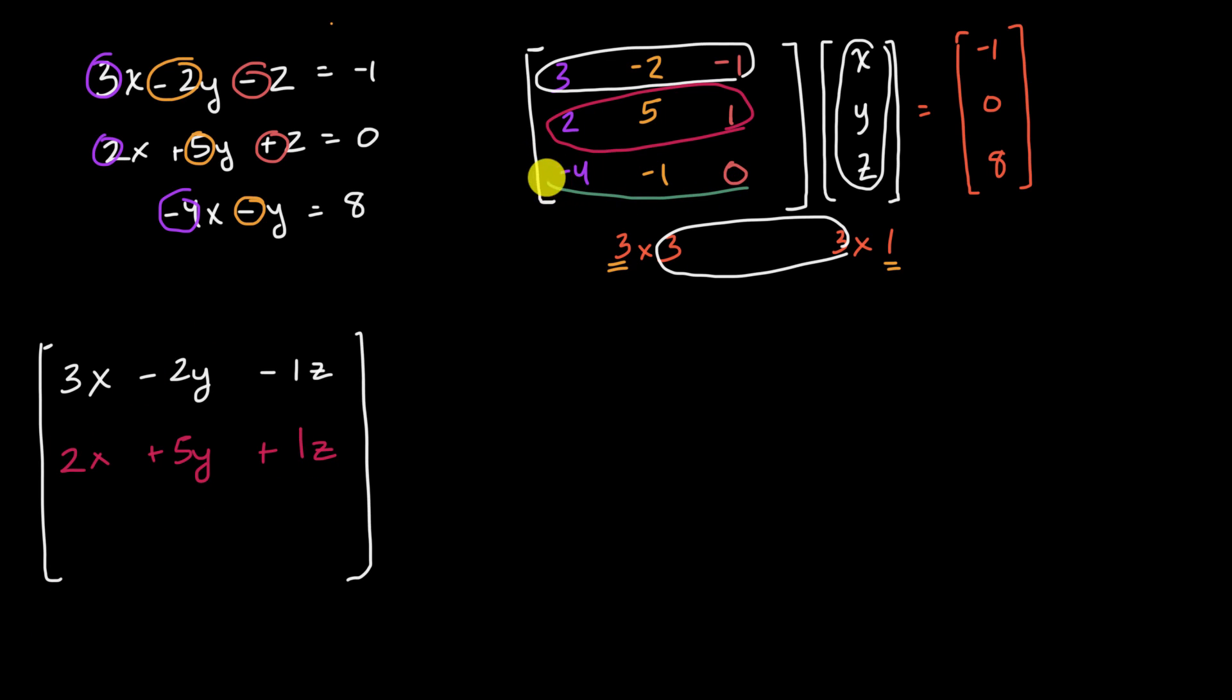And then last but not least, if I take this and I do the same thing with that column, it's going to be negative four times X, negative four X, minus one times Y, minus Y, and then zero times Z, which I could write if I want to or not write, but let me just write it to make things clear.